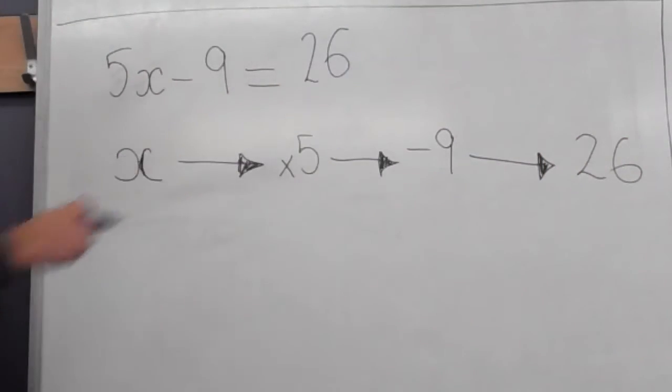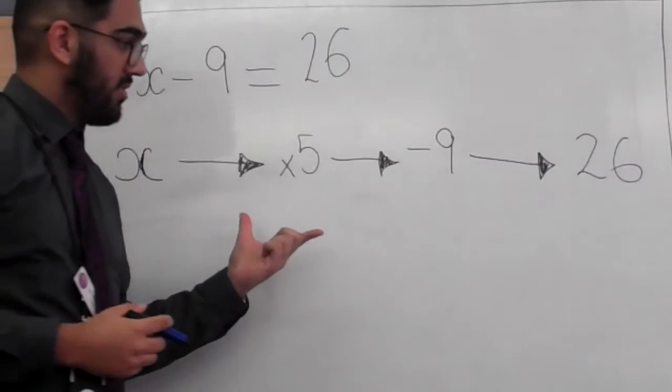Now all I've done there, in that row, is I've written out the equation again in a flowchart. That's all.